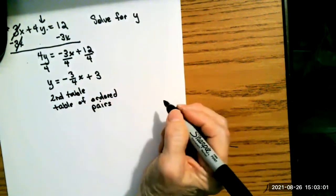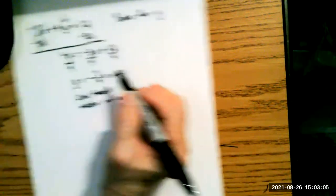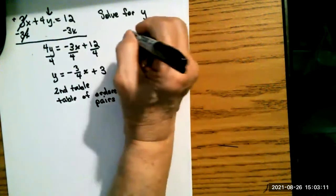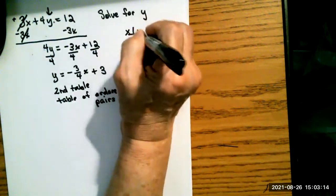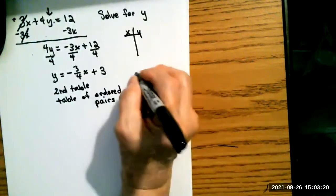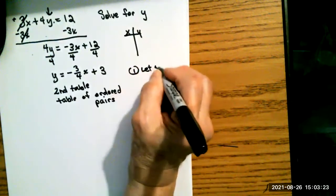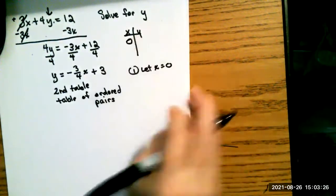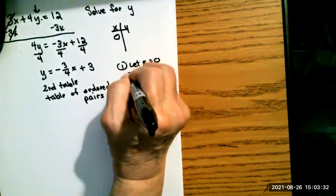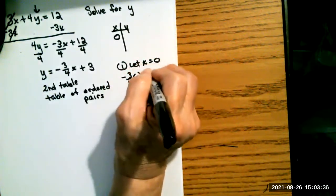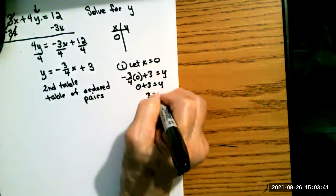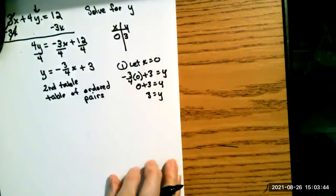But let's suppose we have to do this by hand for our homework. So I'm going to make a t-chart, what we call a t-chart. And you pick your own values for x. So for my first problem, I'm going to let x equal 0 and see what happens. If I let x equal 0, then I have negative 3 fourths times 0 plus 3 equals y. 0 plus 3 equals y, or 3 equals y. So there's my y value of that first ordered pair.